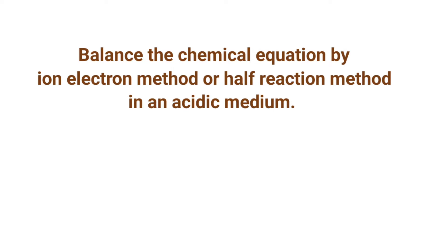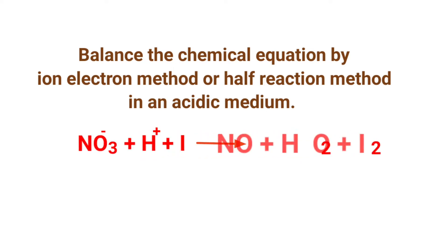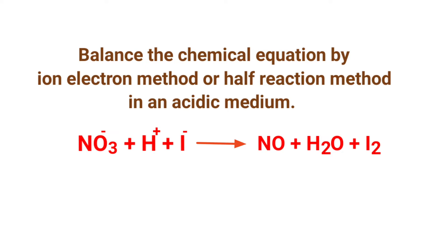Balance the chemical equation by the ion electron method, or half reaction method, in an acidic medium. The equation is: nitrate ion plus hydrogen ion plus iodide ion gives nitric oxide plus water plus iodine.